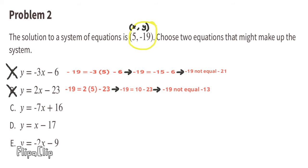Option C: Substitute negative 19 for y and 5 for x. Negative 19 equals negative 35 plus 16. Negative 19 equals negative 19. Yes, this equation does make up the system.